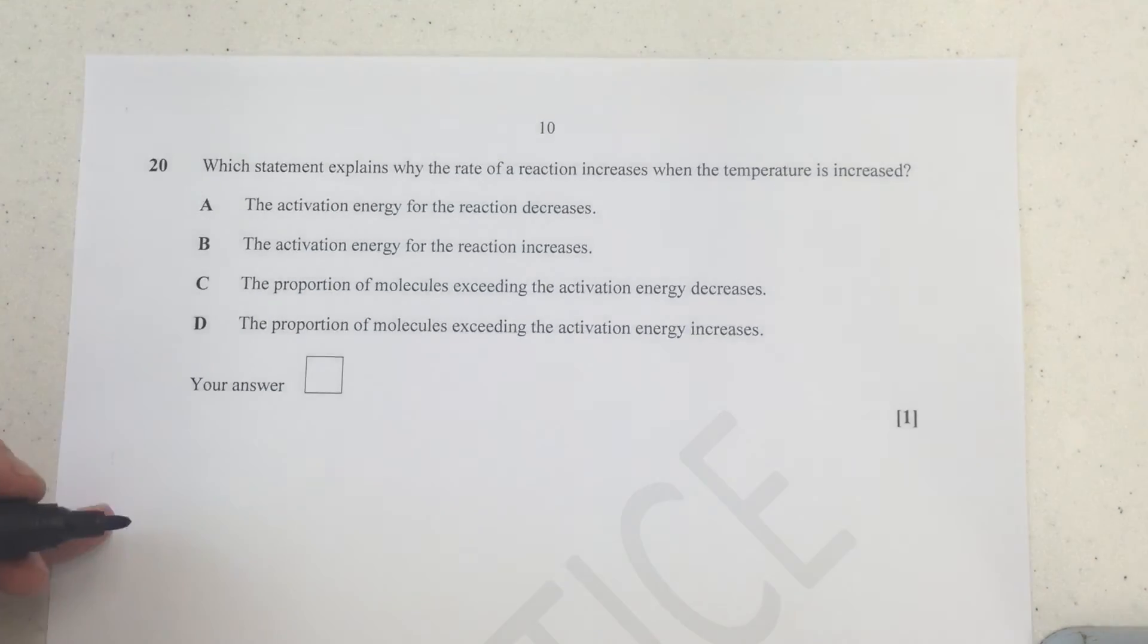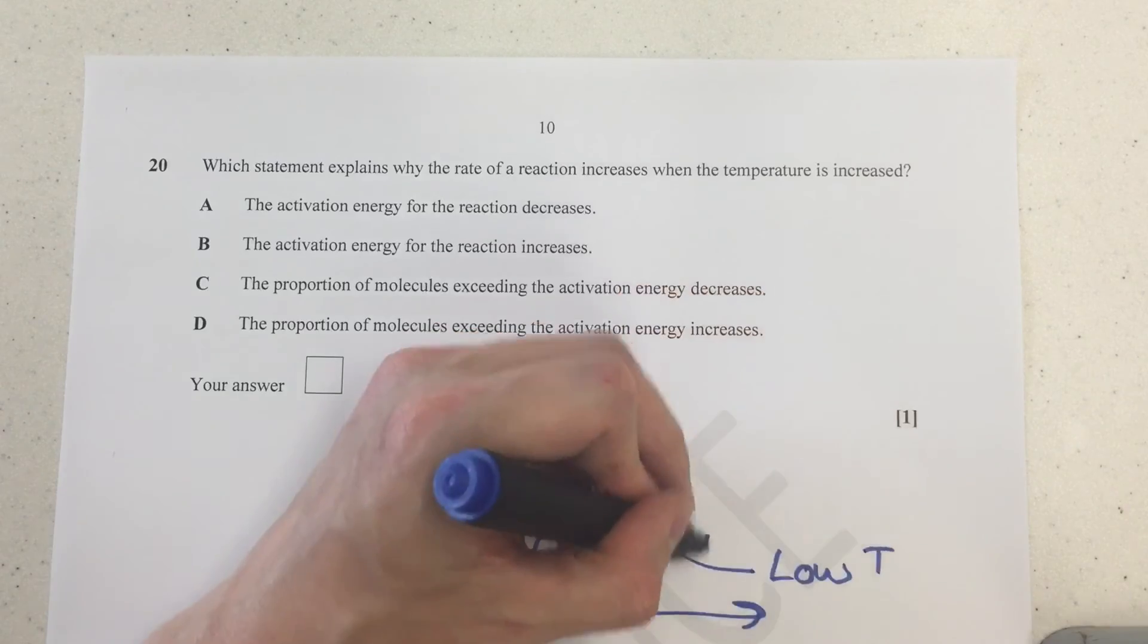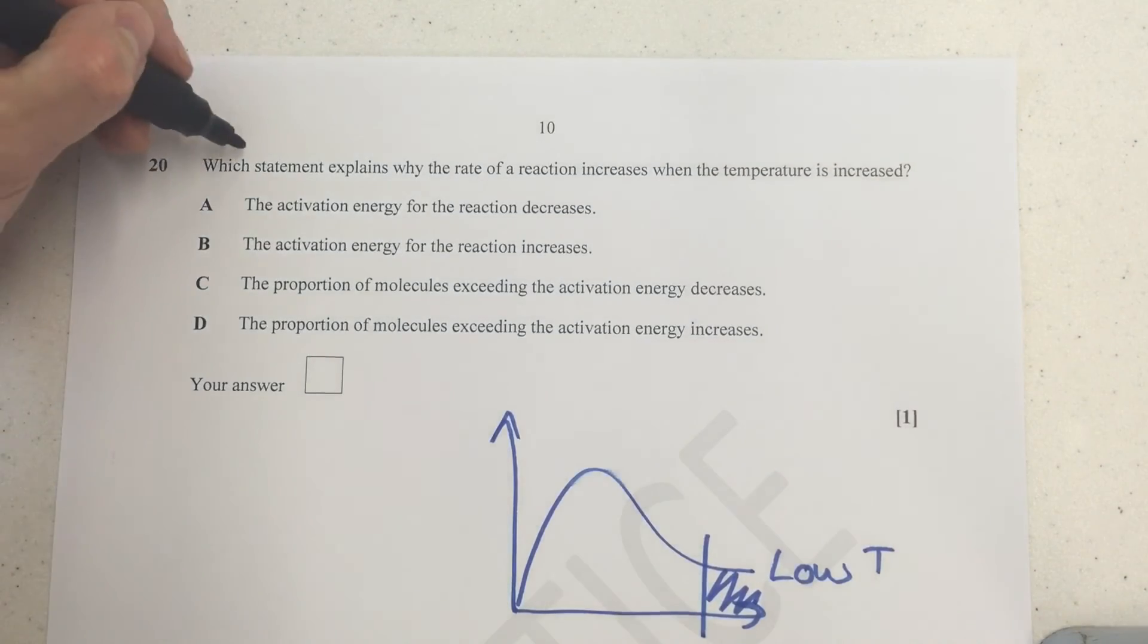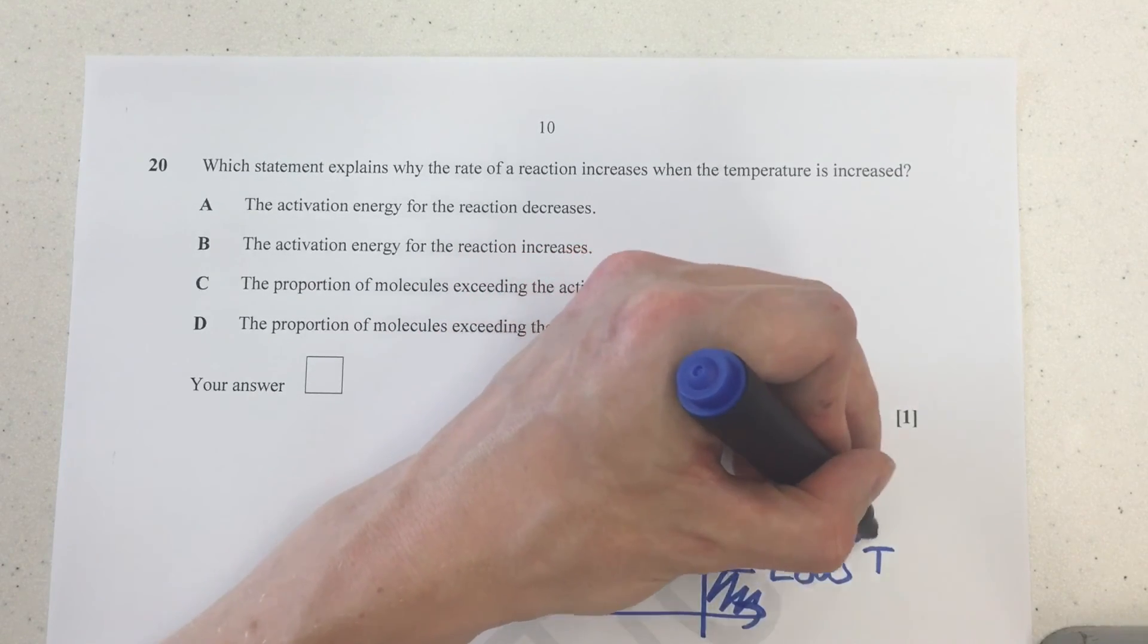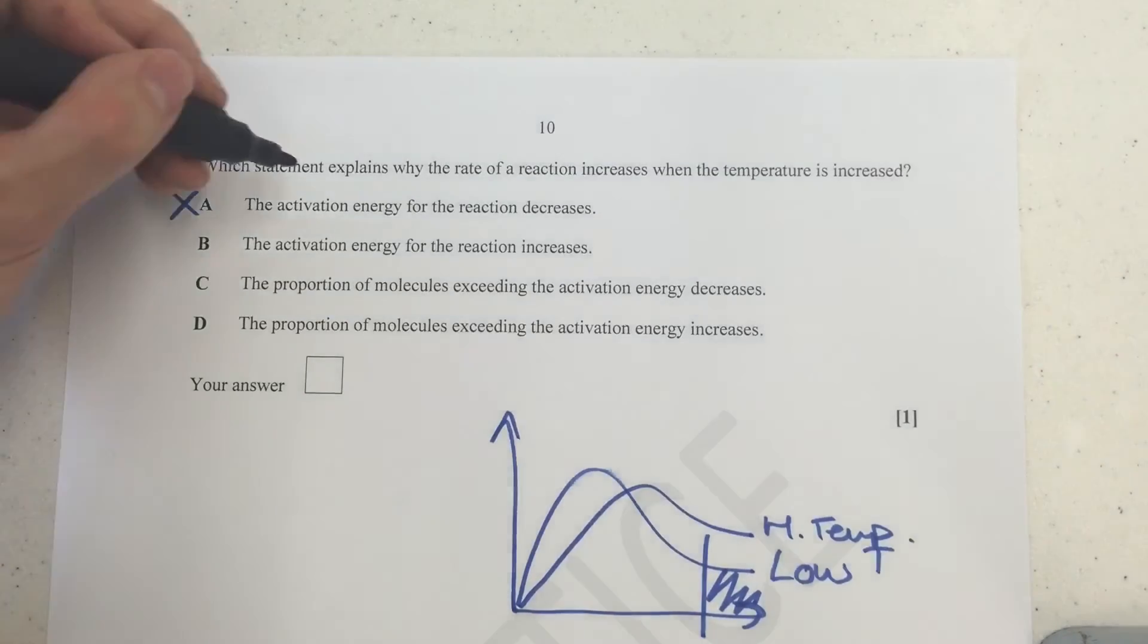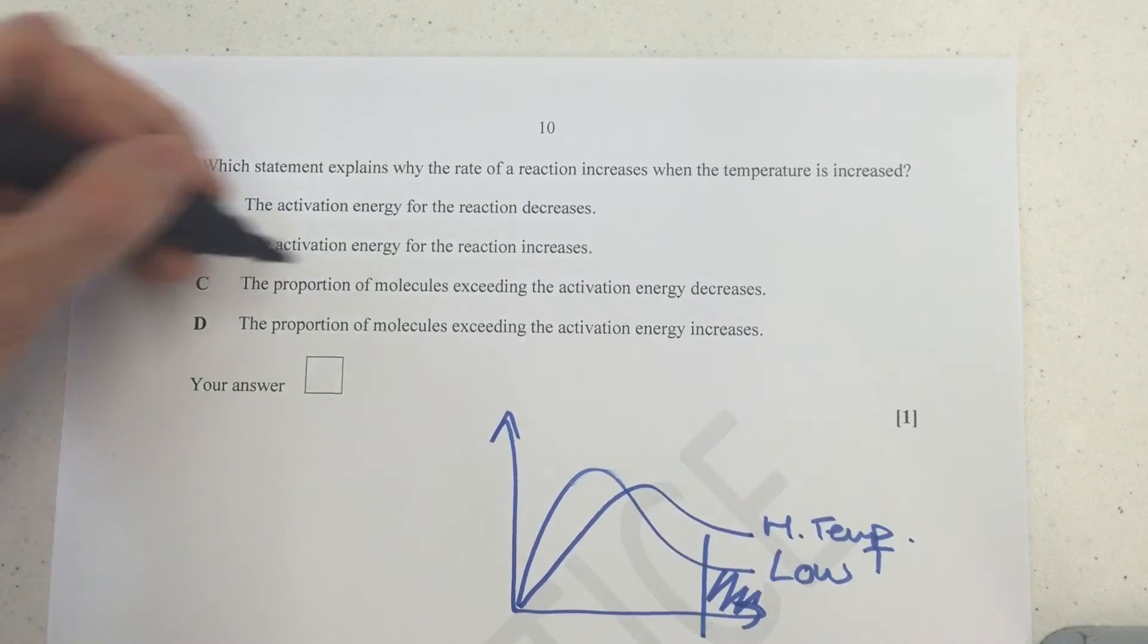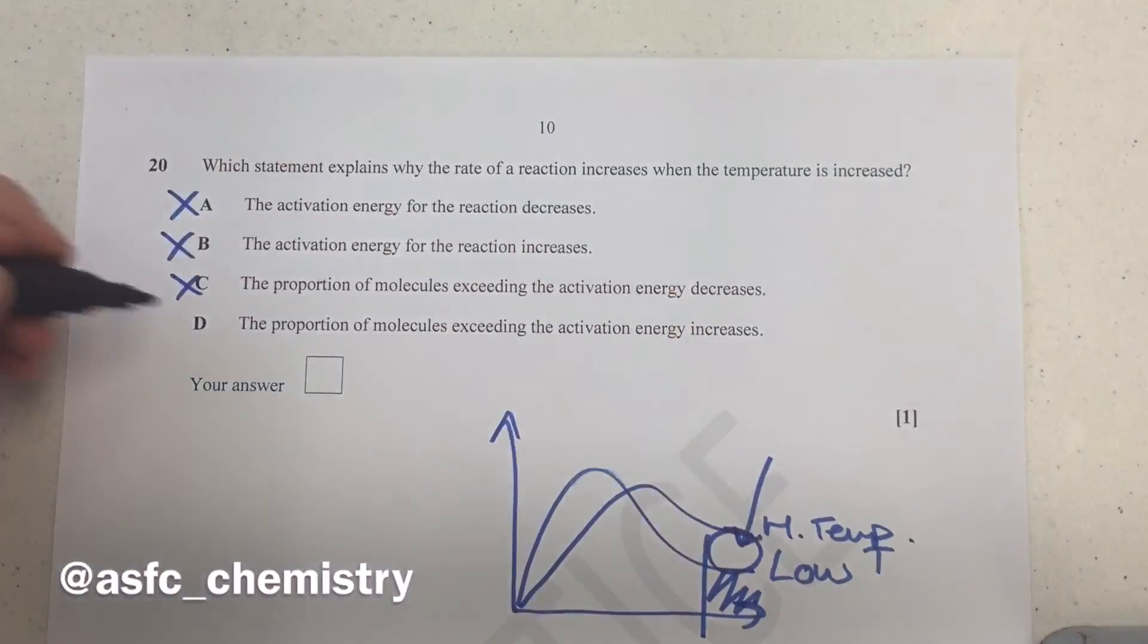Moving on to our final question, question 20. For this one, we want to think about a Maxwell-Boltzmann distribution curve. If you have a low temperature curve and you mark on the activation energy here, you can see that all these particles are able to react upon collision. The question is, which statement explains why the rate of reaction increases when the temperature increases? The activation energy of the reaction decreases. So if I put on a curve for a higher temperature, we can see that the activation energy is the same, so it's not that. That would be if we added a catalyst. It's definitely not B then. The proportion of molecules exceeding the activation energy decreases. Well that can't be true either because I can see that there's more in this space here. And so it has to be D, which backs up the graph saying that there's more molecules able to react upon collision.